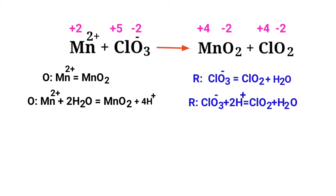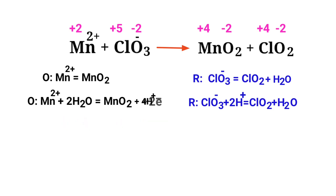Now balance the charges in the oxidation half reaction. Both sides are not equal. To make them equal, you should add electrons — you cannot add protons. Adding two protons to the left side to make it equal to plus 4 would be wrong. Instead, add two electrons to the right side to make it equal to plus 2. Now the charges are equaled in the oxidation half reaction.